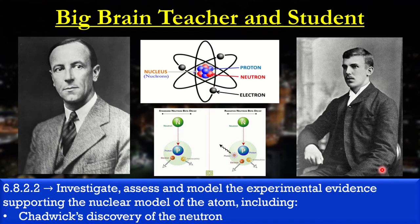Just a bit of context so you know where everyone is related. Ernest Rutherford was the person who came up with the positive nucleus of the atom. He was the teacher of James Chadwick, and Chadwick essentially discovered the neutron, through evidence of his own and from other scientists as well.